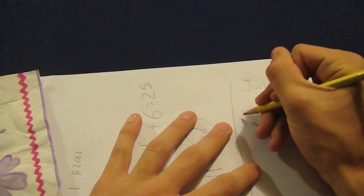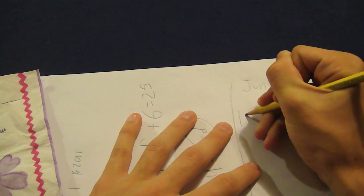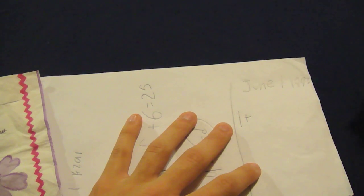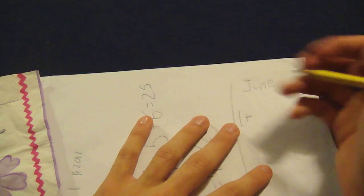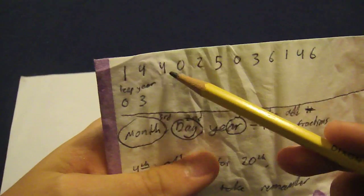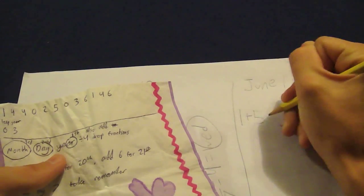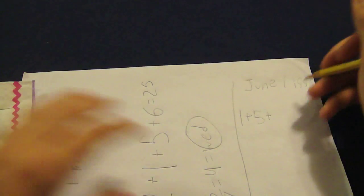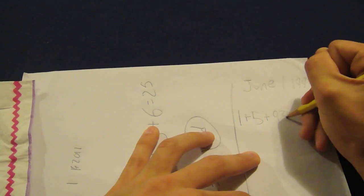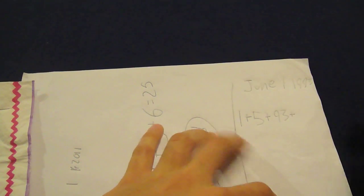So anyways, June 1st, 1993. You can start off with the easy thing. You can start off with the day. So it was on the first, plus the month. If you memorized it, you would know it's a five. If not, just refer to the chart and you can see January, February, March, April, May, June. So that's a five plus the year, which is 93.